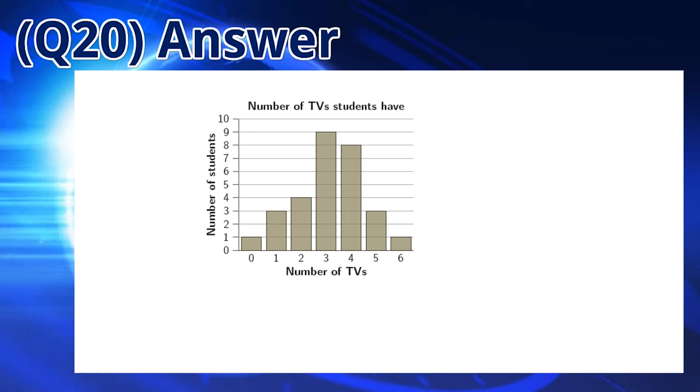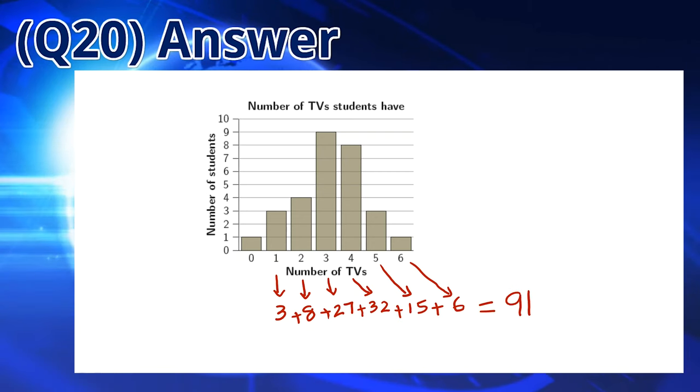To calculate the number of TVs, we can multiply the number of TVs by the number of students. In the first column, there is one student who has no TVs. In the second column, there are 3 students with 1 TV each, that gives a total of 3. In the third column, there are 4 students each with 2 TVs, so there are 8 TVs altogether. We can calculate the rest of the columns by multiplying the number of TVs by the number of students. By adding all of the TVs together, we get a sum of 91. So the answer is C.